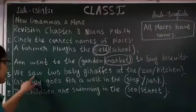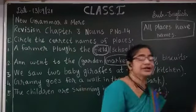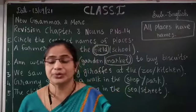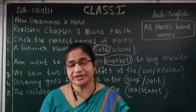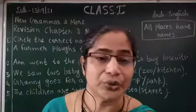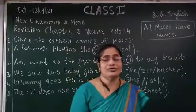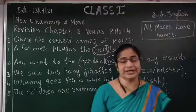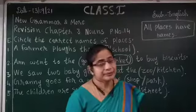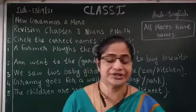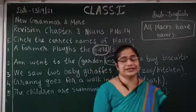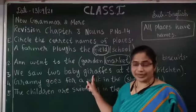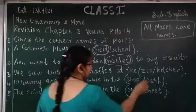Third one: we saw two baby giraffes at the zoo or kitchen. You can see the picture after the question — two baby giraffes, and two children are looking at them. You can always see animals at the zoo. In the kitchen you see vegetables and food items — it is the place where mummy cooks food. So the correct answer is zoo. Z-O-O, zoo.